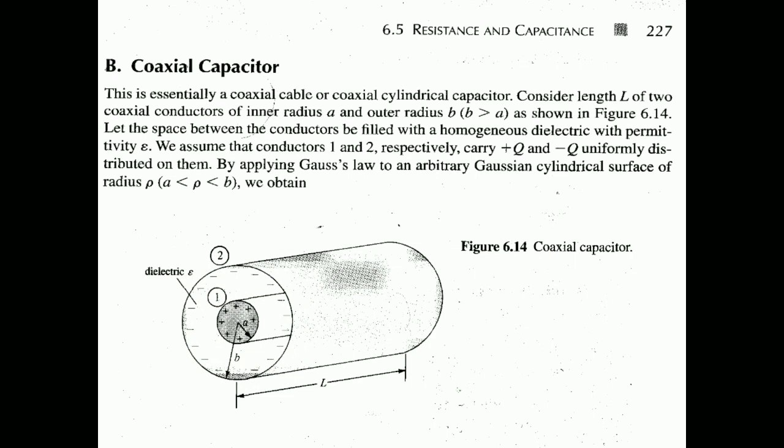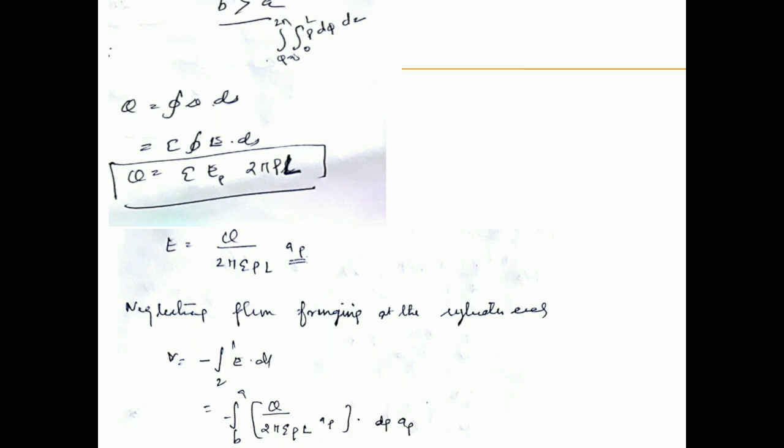The variable rho ranges from a to b. As per Gauss's law, Q equals the integral of D dot dS, and D equals epsilon E. For the cylindrical coordinate system, integrating phi from 0 to 2pi and z from 0 to L gives Q equal to epsilon E times 2pi rho L. Therefore, E_rho equals Q divided by 2pi epsilon rho L in the a_rho direction. The fringing effect is neglected.